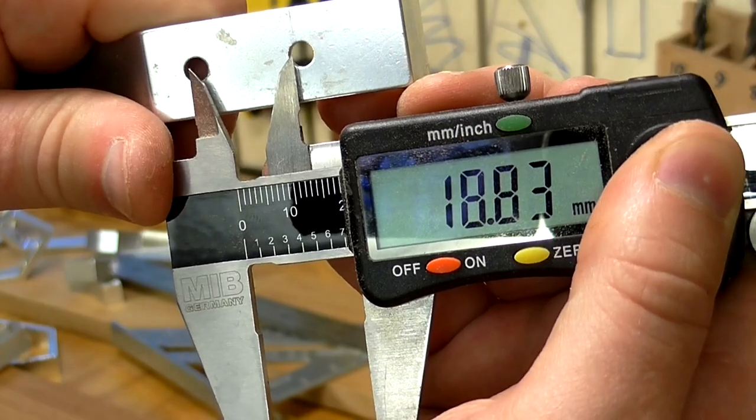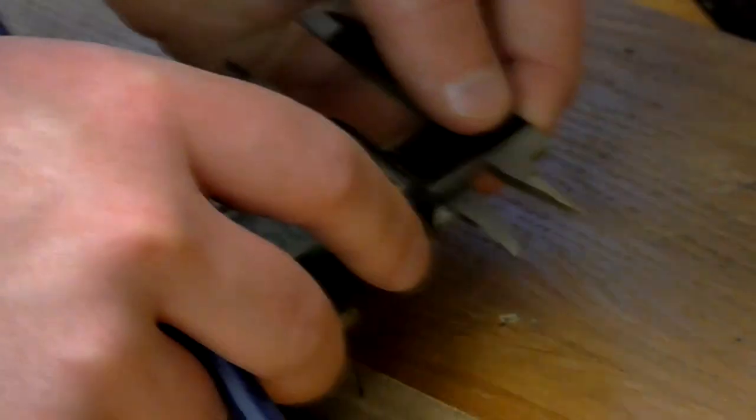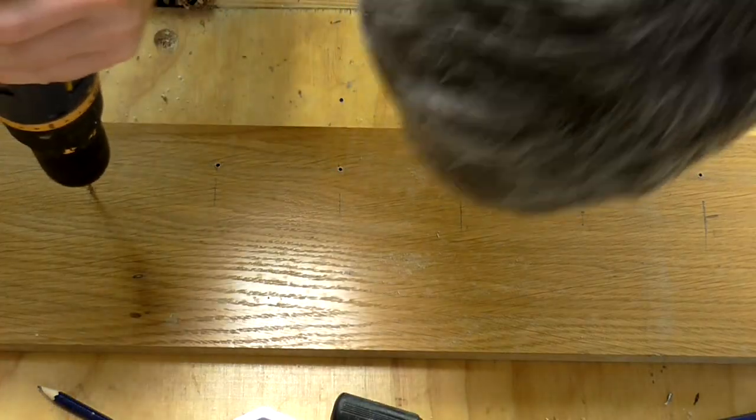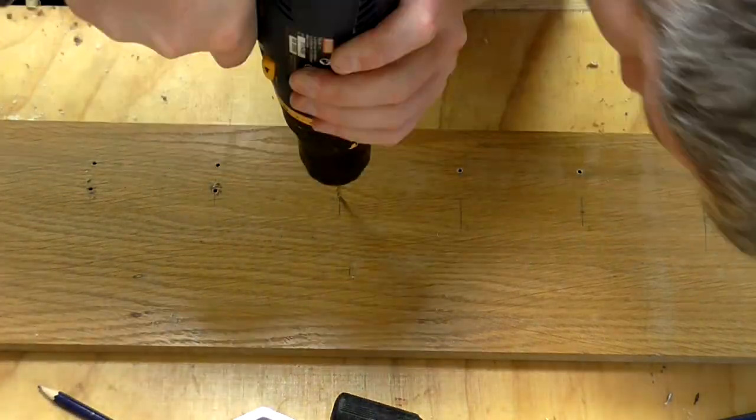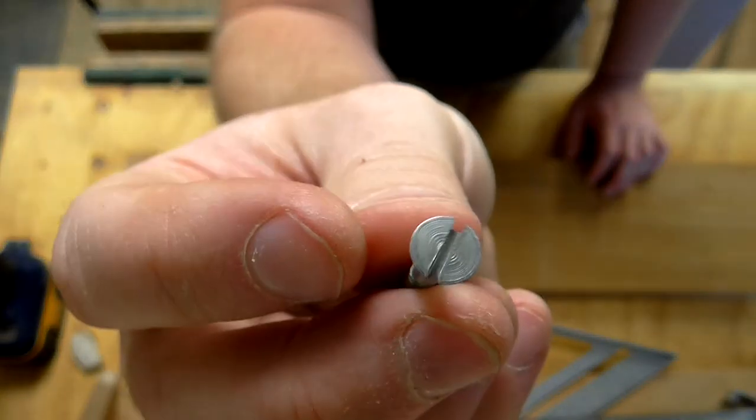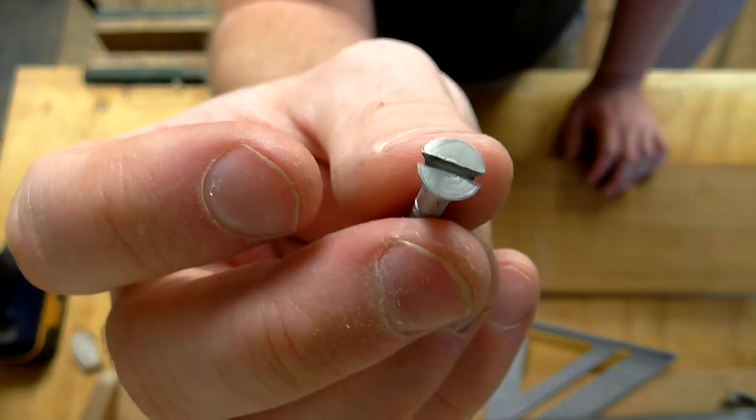The distance between the two holes on the coat hooks is just under 19 millimeters. I'll use the calipers just to make a mark where I need to drill. I'm going to use the slot head screws that came with the hooks originally as I think they'll look better than the Phillips head screws.